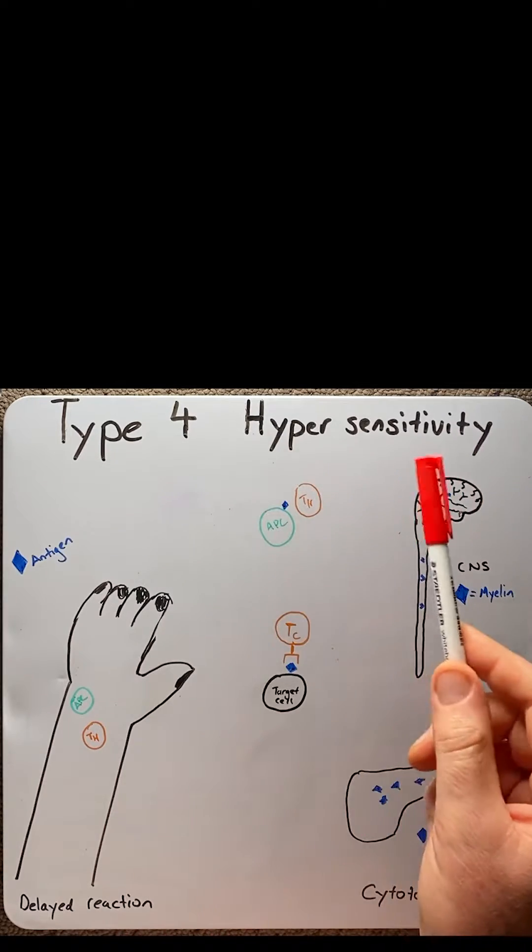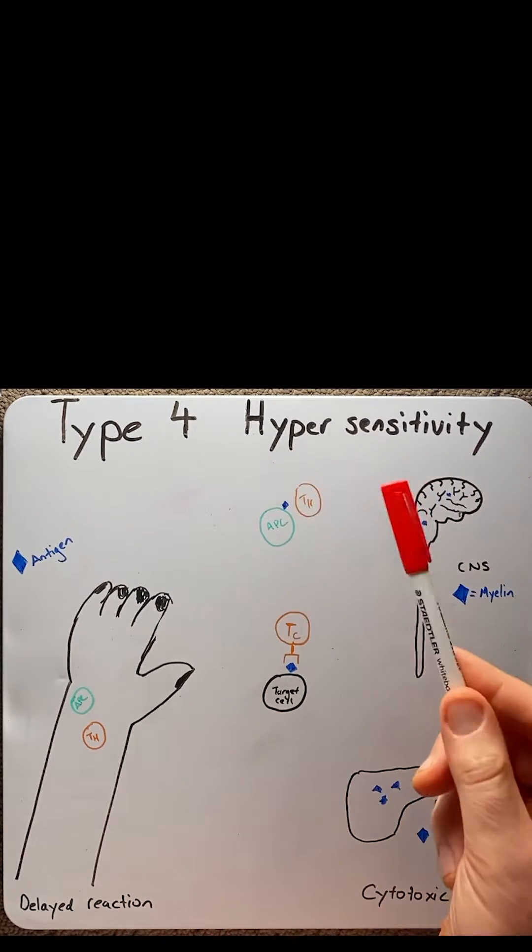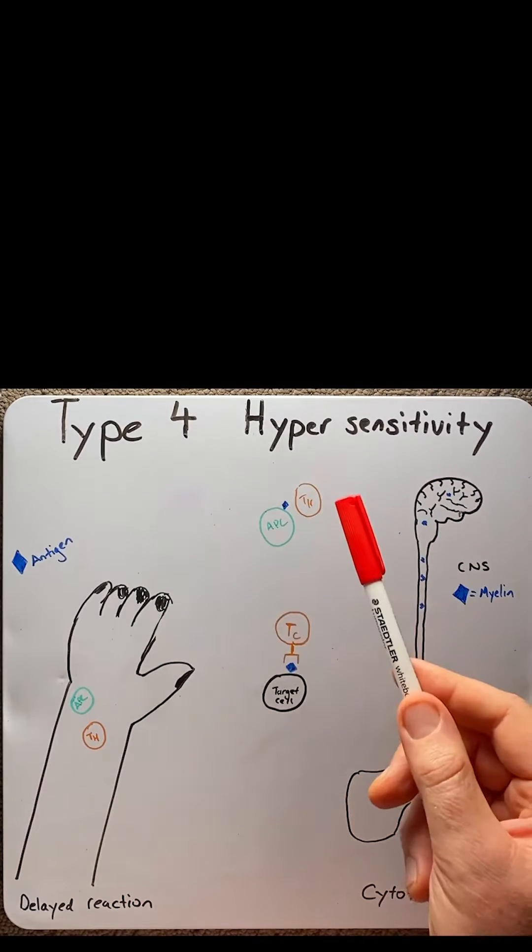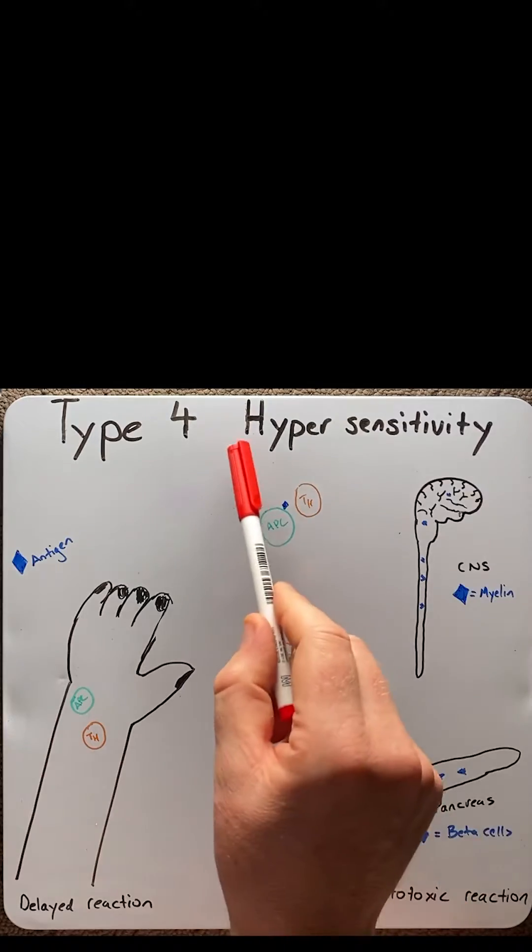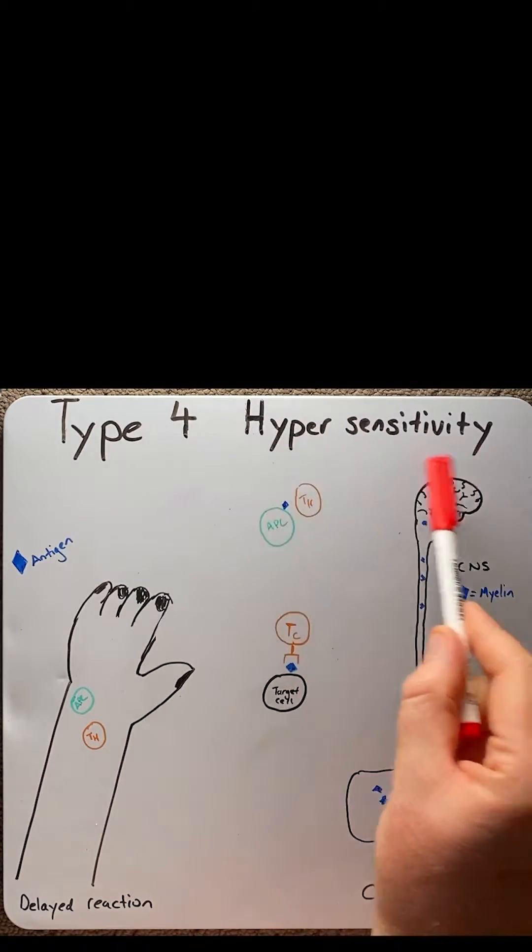Hypersensitivity reactions are excessive immune responses to normally harmless substances that induce inflammation and can lead to tissue damage and cell death. There are four types of hypersensitive disorders.